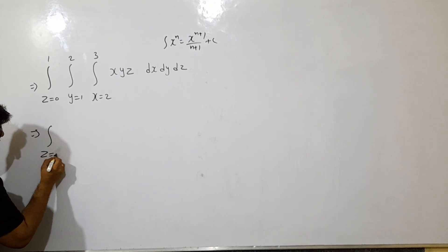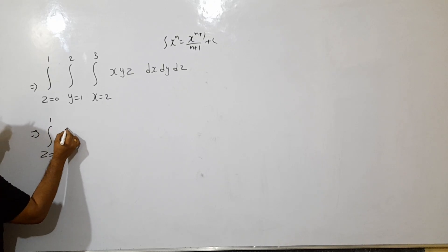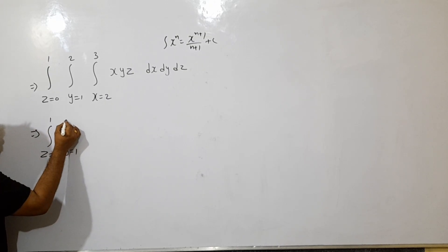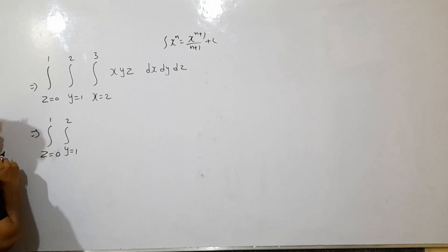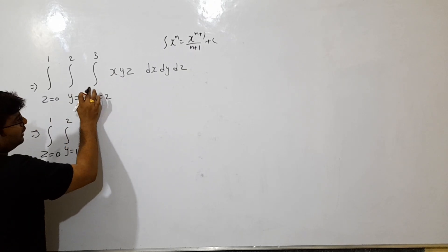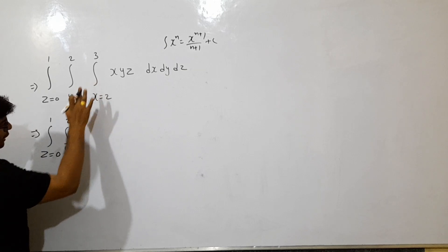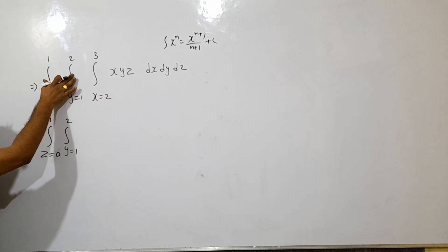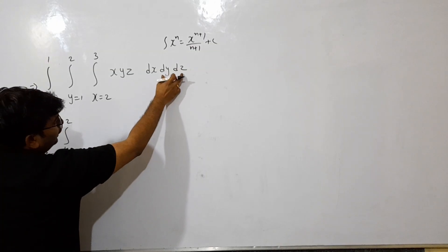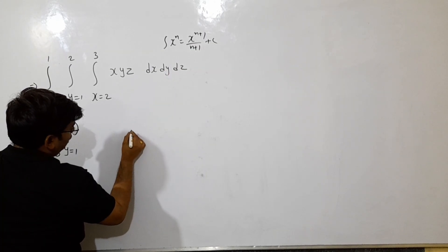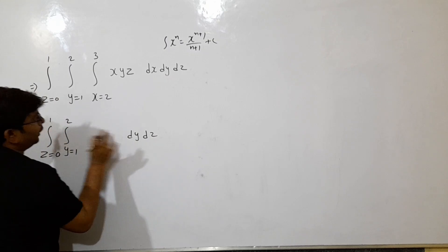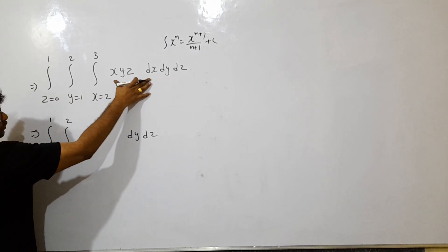Integration: z is equal to 0 to 1, integration y is equal to 1 to 2. Okay, so if you look at x's integration, I need to apply it. We can write it — you can write it from 2 to 3. Next, we will write it as a relation. You can write it like dy dz.